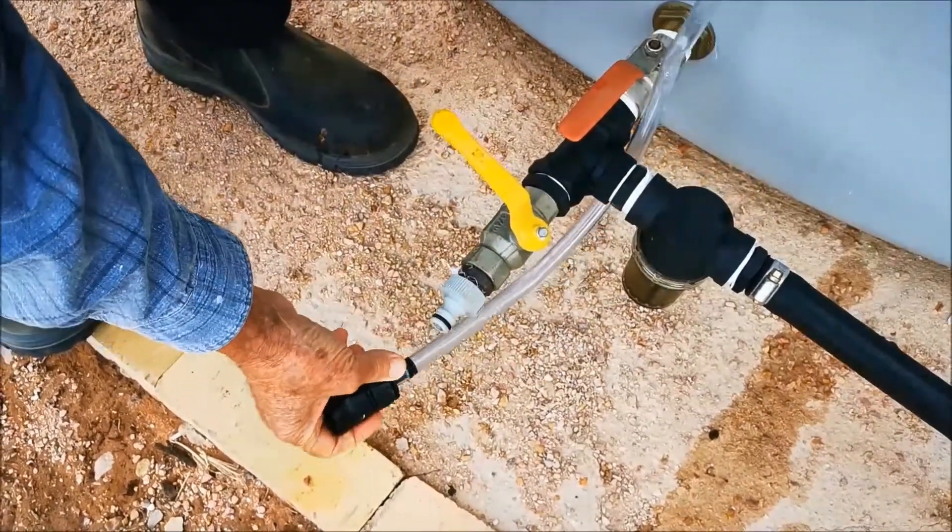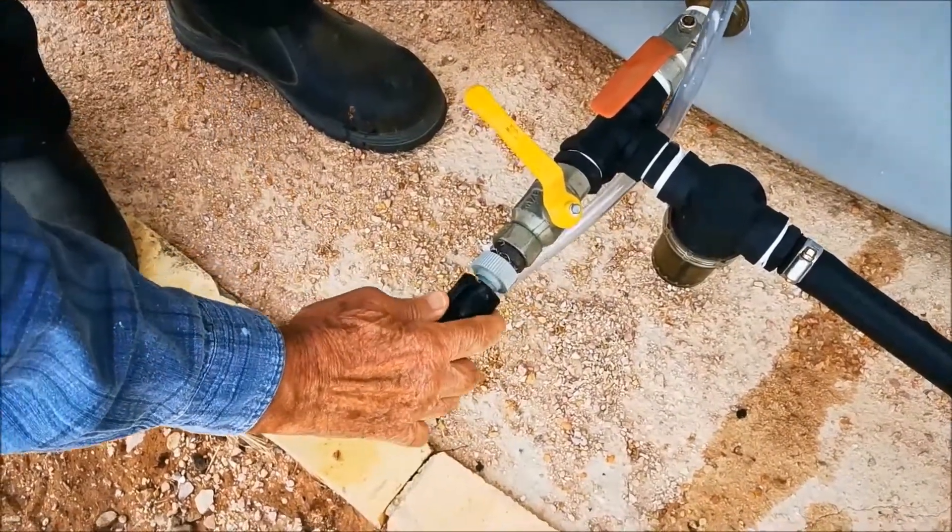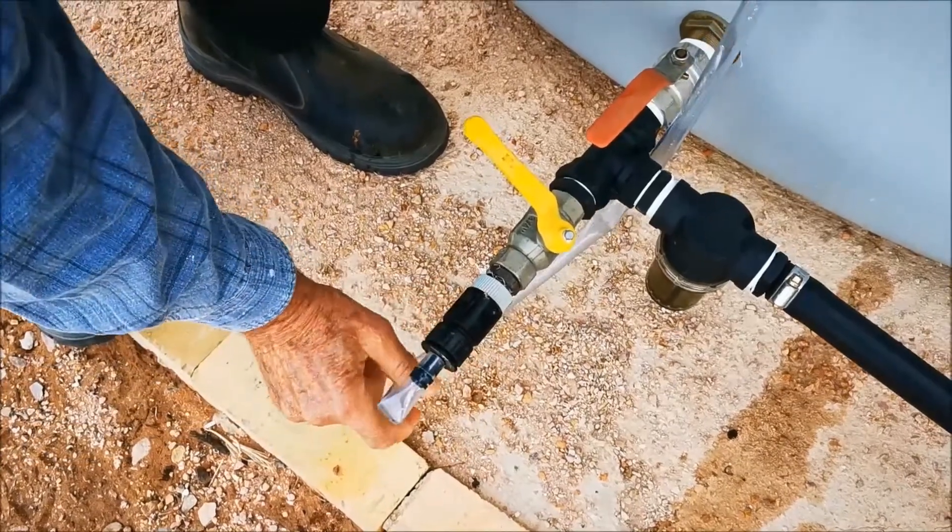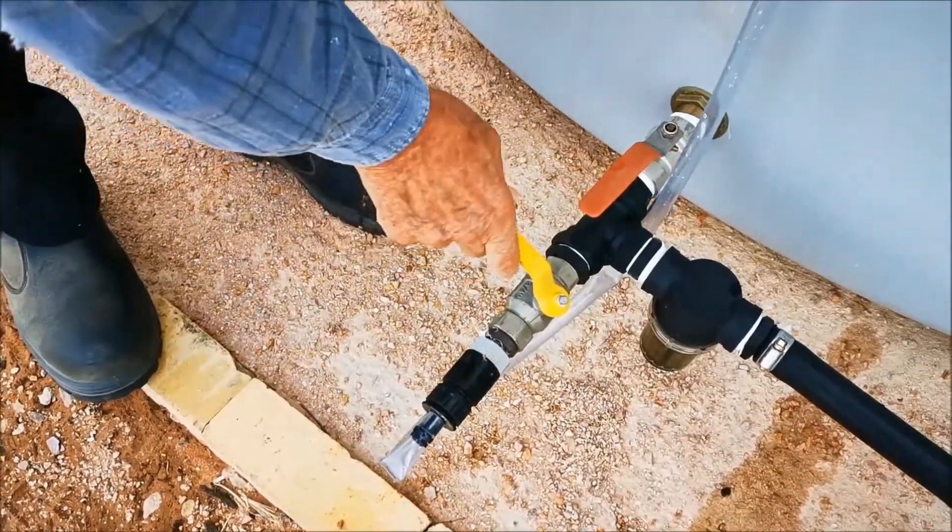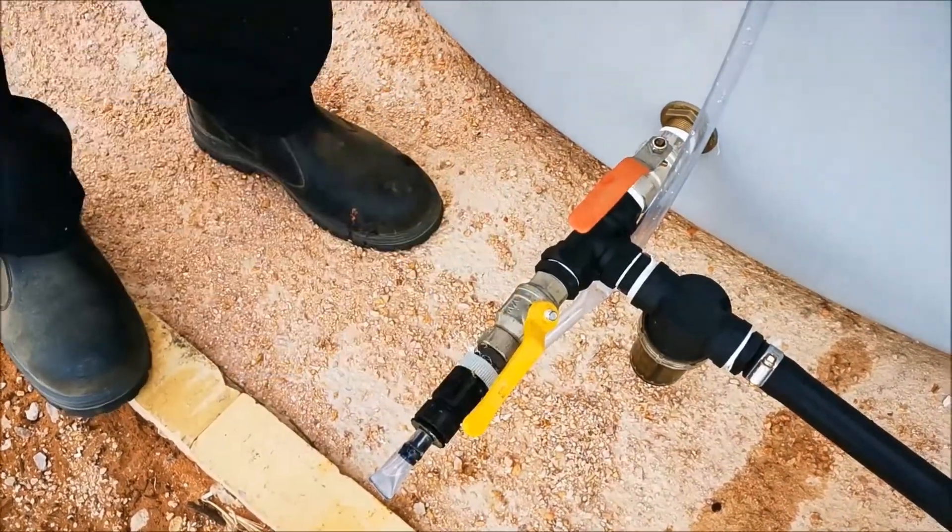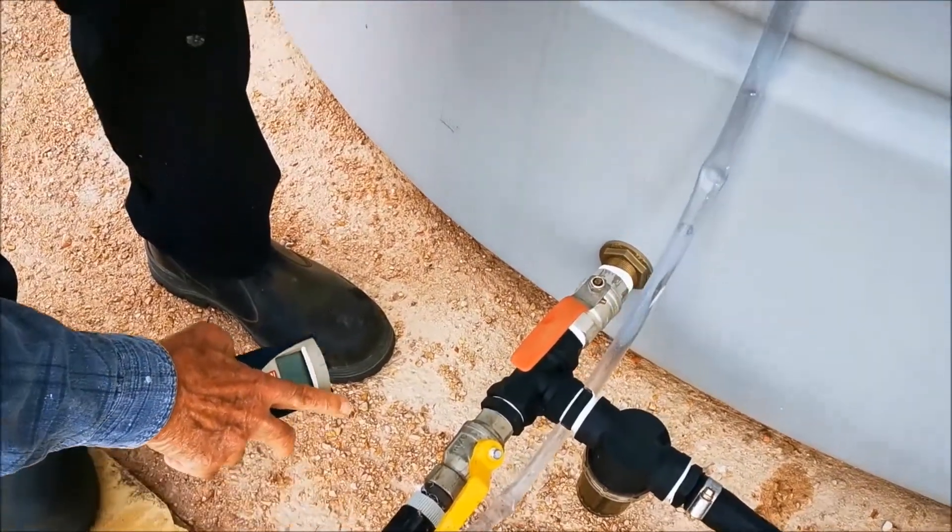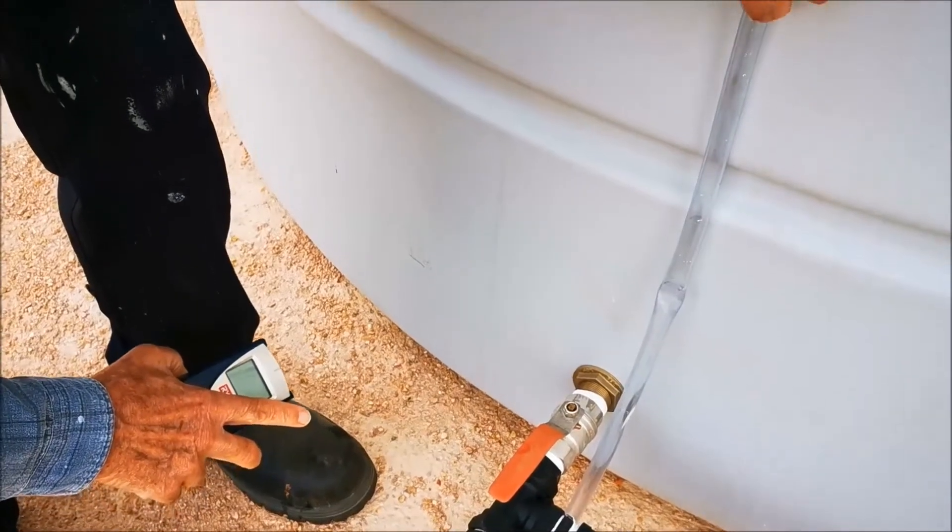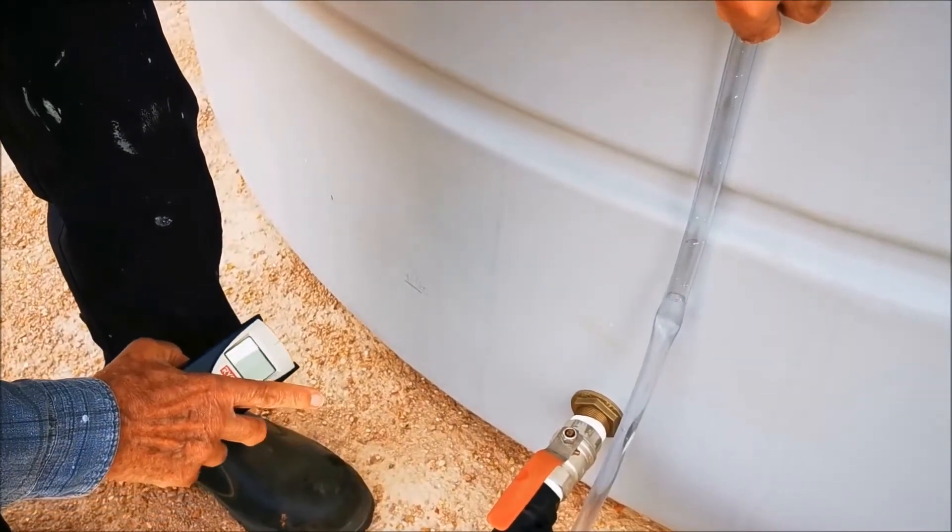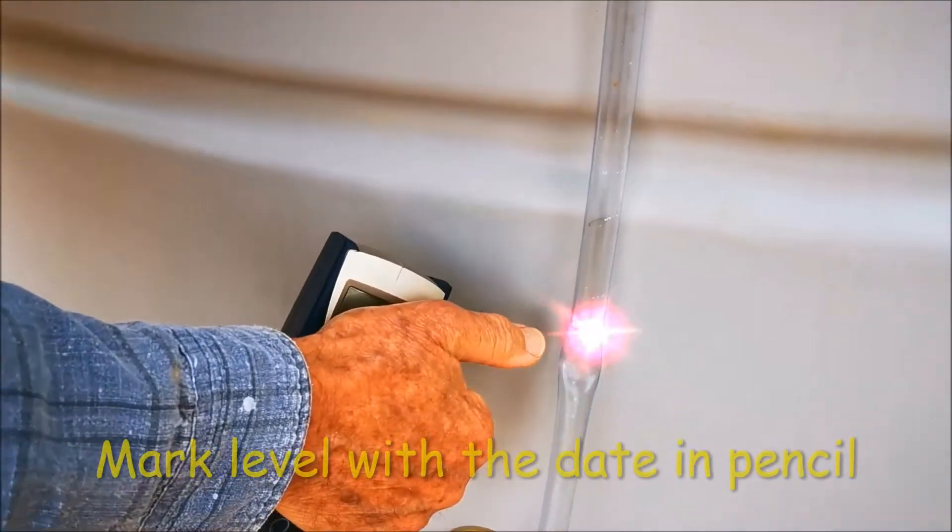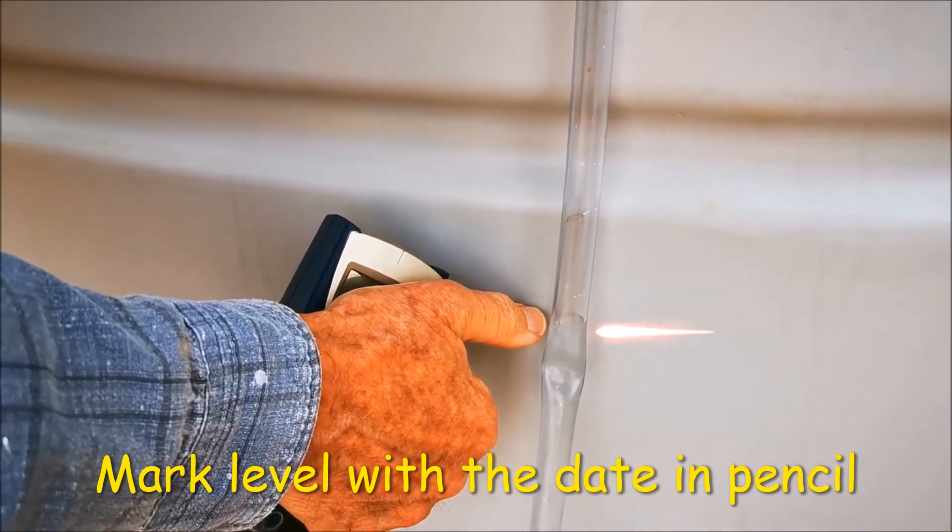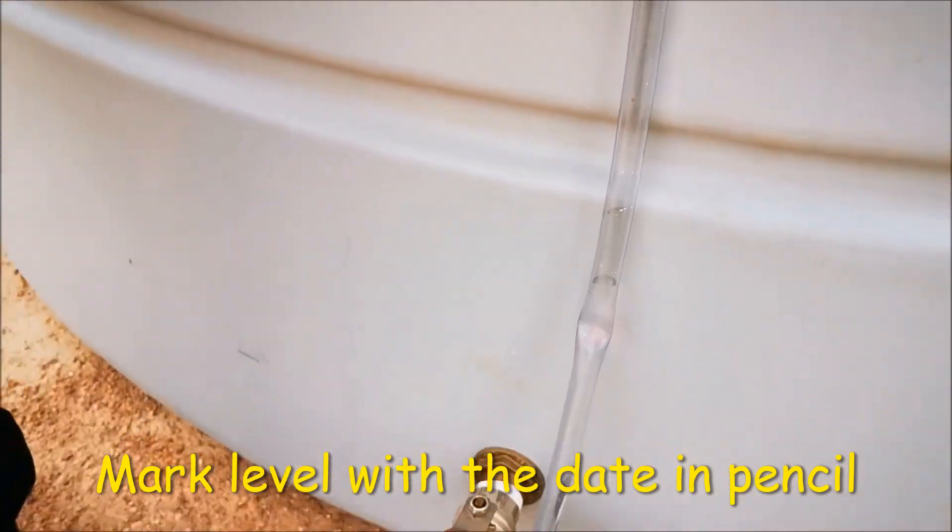So what we basically do is just put this on the end like that, make sure there are no kinks, switch that on, and that will end up at the tank's water level, which is just there. So you can mark that, put the date, and you know exactly where you are.